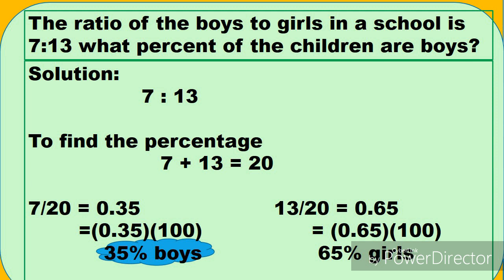Next question. The ratio of boys to girls in school is 7 is to 13. What percent of the children are boys? So tinatanong dito kung ilang porsyento ang mga lalaki. If the ratio is 7 is to 13, para makuha yung percentage natin, ang gagawin natin, i-add lang natin yung dalawa. 7 plus 13 equals 20. And then i-divide natin yung 7 which is the boys. 7 divided by 20 equals 0.35. And then yung 0.35 na yun, times natin sa 100. So that is 35, 35 percent boys.